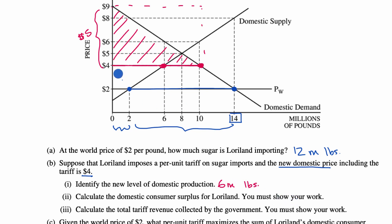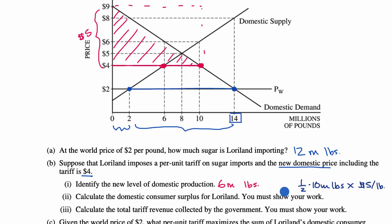So the consumer surplus calculation is: 10 million pounds times $5 per pound times one half. The pounds cancel out, giving us 50 million dollars times one half, which equals 25 million dollars.